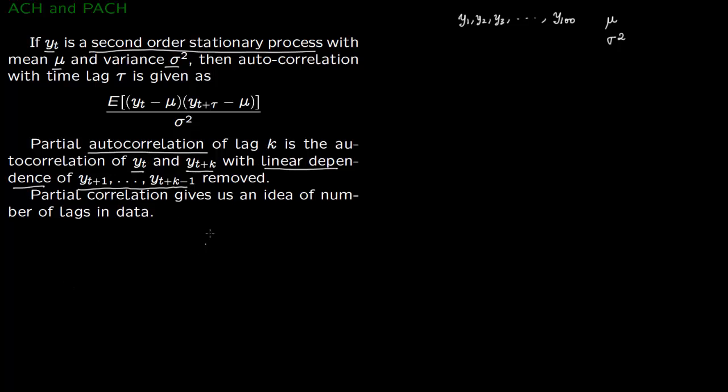Autocorrelation is just the correlation function, but you need two series. Say you have series one going from 1 to 100 and series two going from 1 to 50. Both are part of the same time series. You find the correlation between the series with 100 values and the series with 50 values. We call it autocorrelation because this small series is part of the big series, and there's a lag of 50. That's what time lag τ is. That's precisely what autocorrelation is.